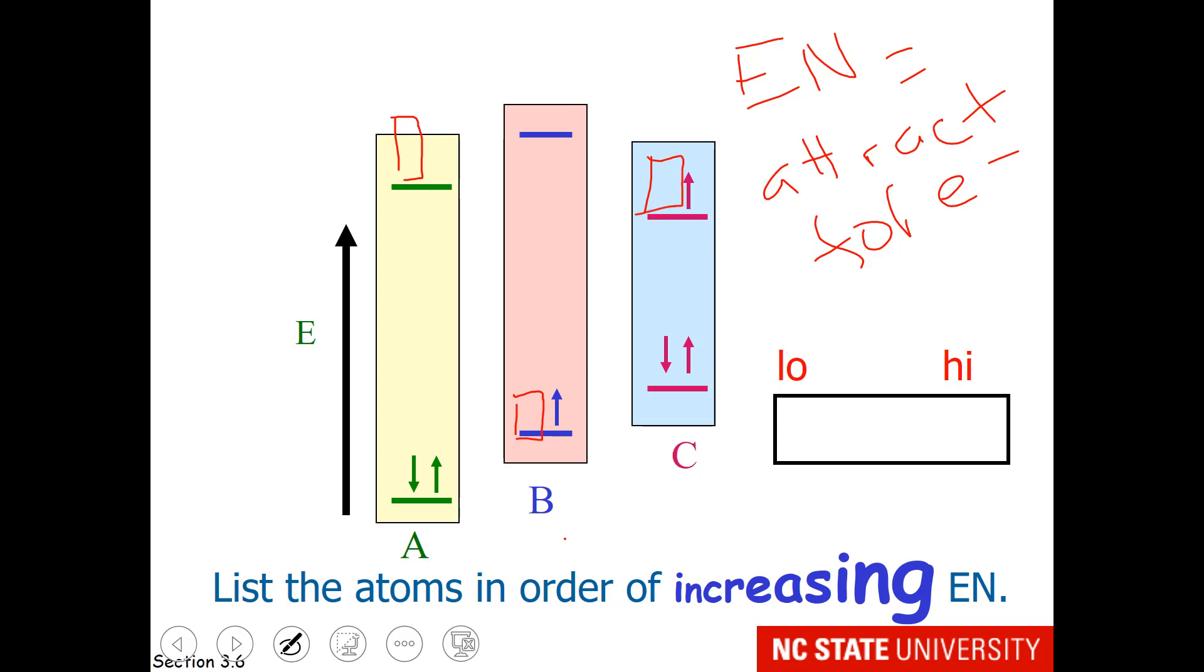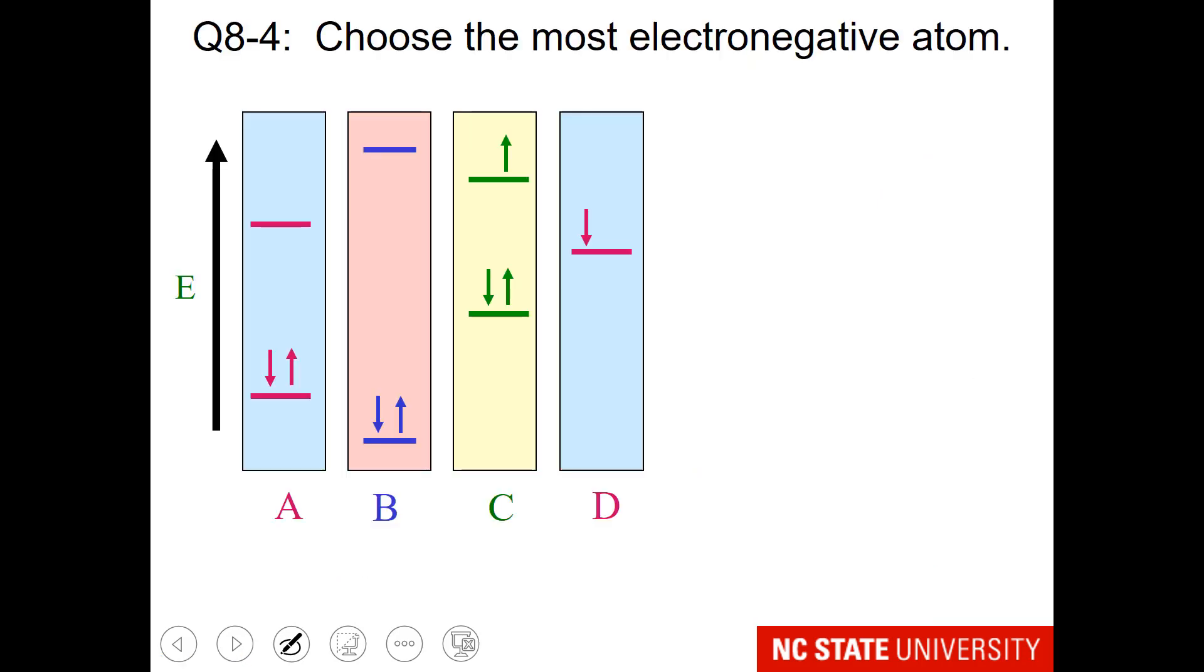So remembering that the nucleus is down here, which one of these is least attractive for the electron? Meaning it is furthest from the nucleus. Well, I hope that you will say A. Your next one would be C. And the one that is most attractive to the electron would be mystery element B. So here are your questions.